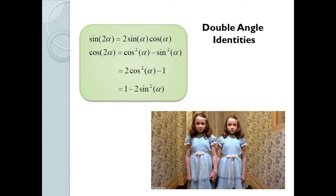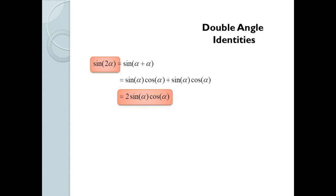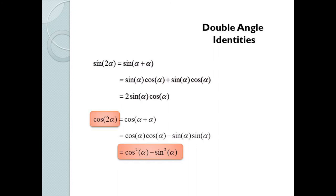Let's finish by deriving our very important double angle formulas. These are all quite easy to derive from the sum and difference formulas. For sin(2α), think of it as sin(α + α), which by the sum formula gives sin α cos α + sin α cos α = 2 sin α cos α. Similarly, cos(2α) = cos(α + α) = cos α cos α − sin α sin α = cos²α − sin²α.